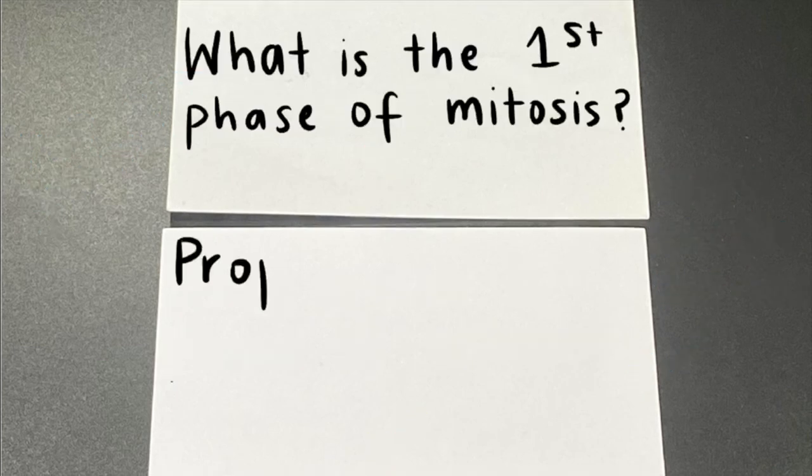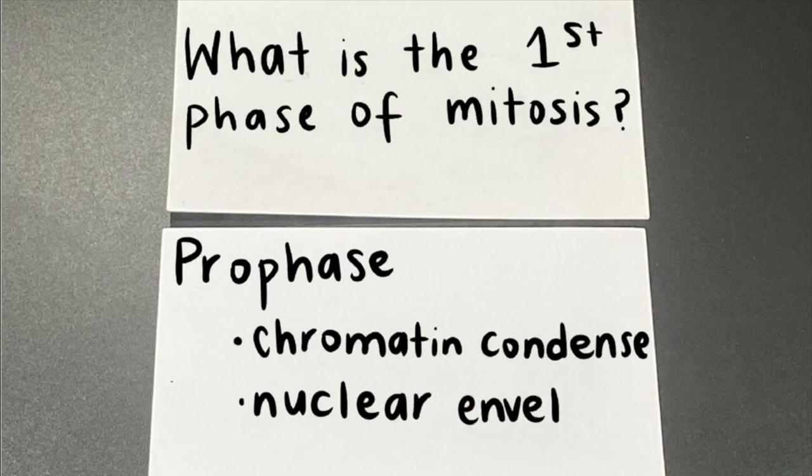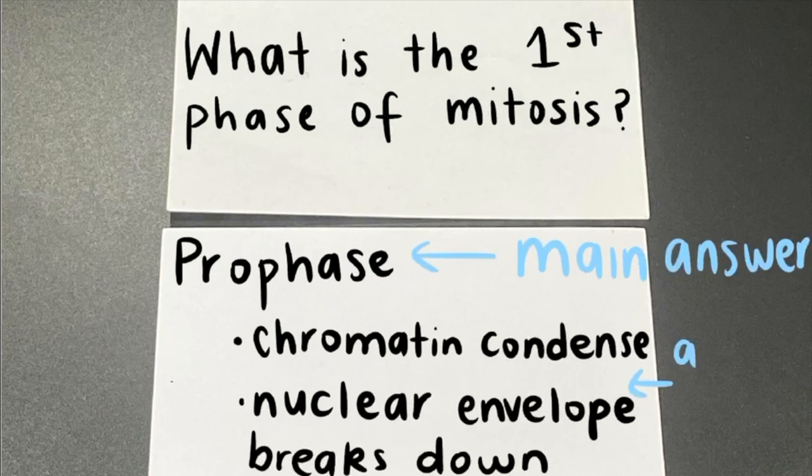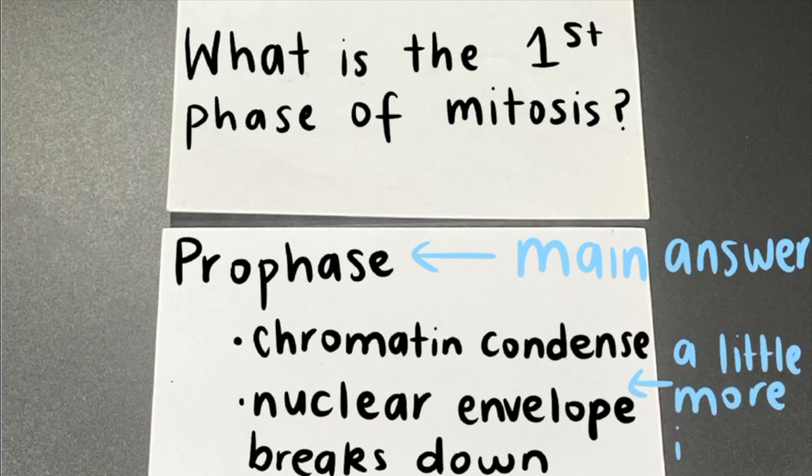Then, on the back, write down one main answer that stands out, and if you need any more information, write it in a smaller font and up to two bullet points. Since your main answer will stand out, you'll be able to memorize it better and writing your cards in this way will also make them more concise.